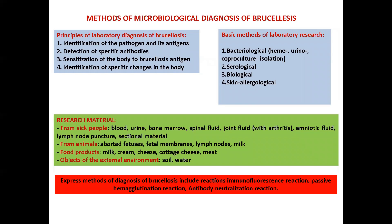Methods of microbiological diagnosis: the principles of laboratory diagnosis of Brucellosis include (1) identification of the pathogen and its antigens, (2) detection of specific antibodies, (3) sensitization of the body to Brucellosis antigen, and (4) identification of specific changes in the body. Basic methods of laboratory research include bacteriological, serological, biological, and skin allergological research.